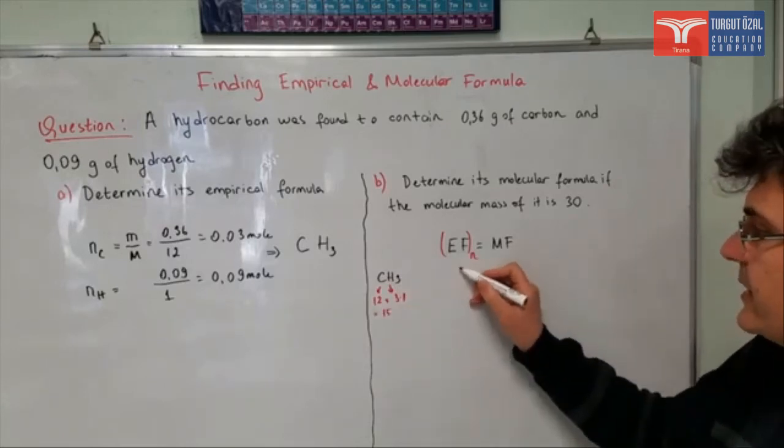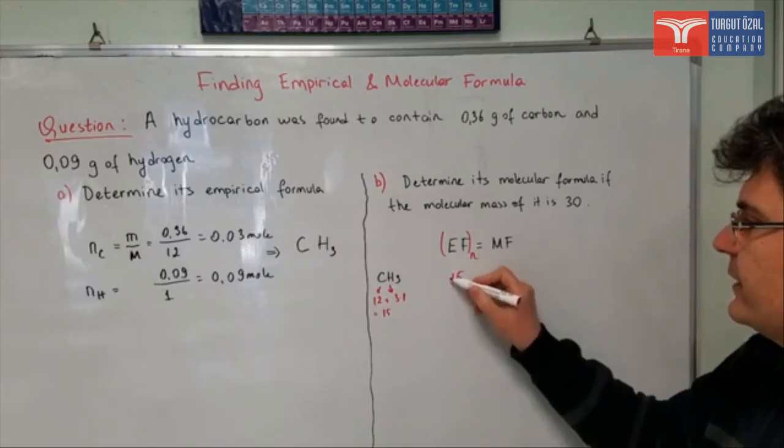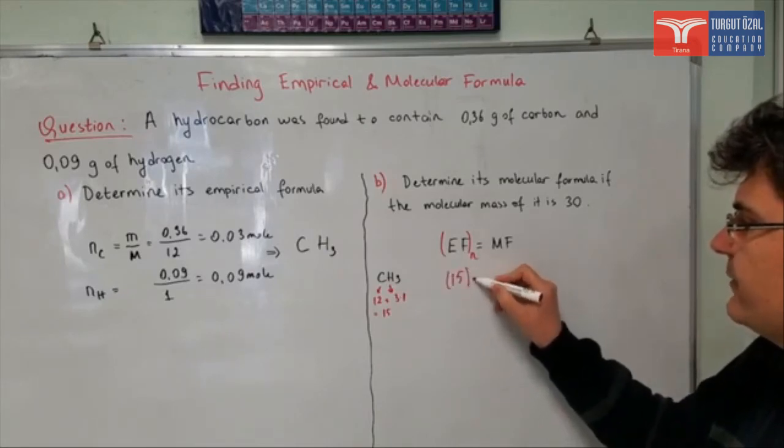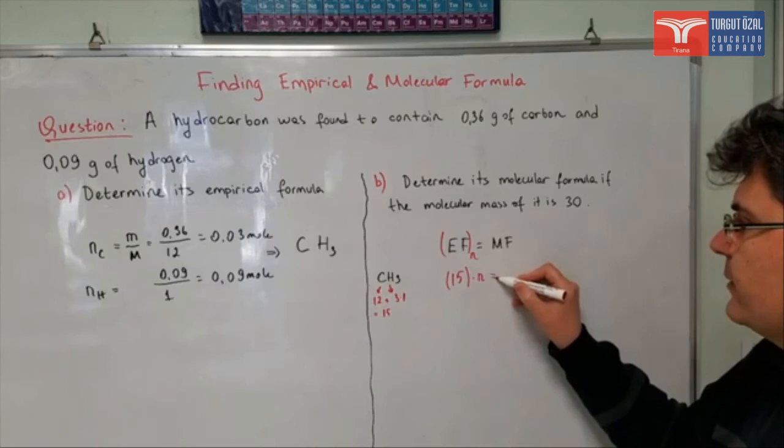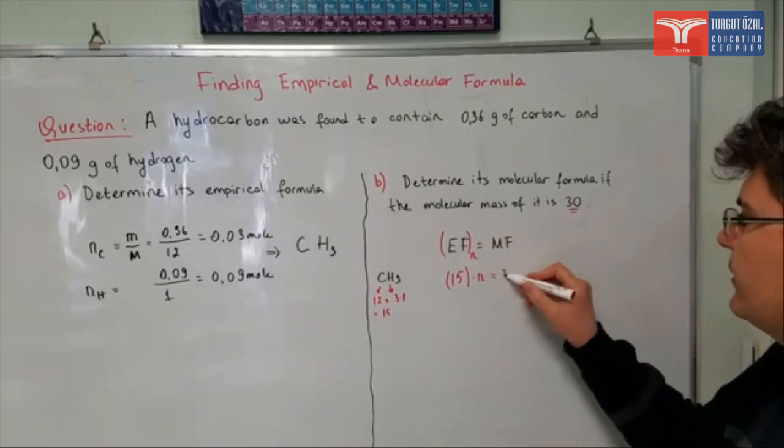So we can say that the mass which corresponds to this empirical formula is 15. So we can say that 15 times N will be equal to the mass which corresponds to this molecular formula, which is given to be 30.